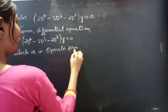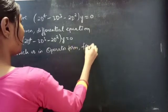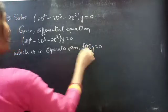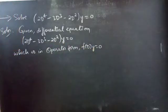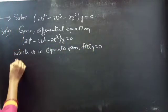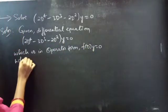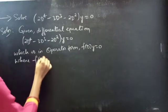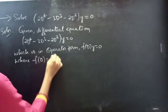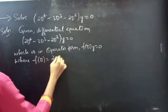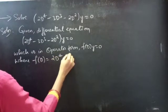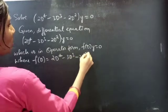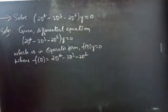This gives us f(D)·y = 0. By comparing these two, we will get f(D), where f(D) equals 2D⁴ minus 3D³ minus 2D².